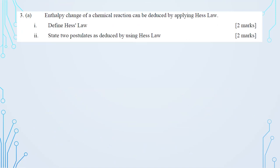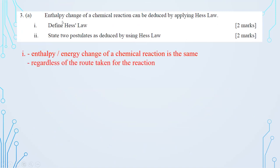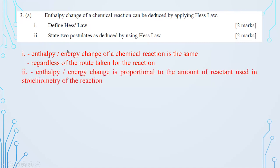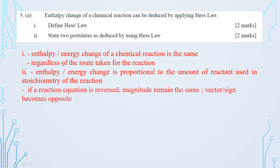Essay question three: define Hess's Law — the enthalpy change of a chemical reaction is the same regardless of the route taken, whether it proceeds in one step or a series of steps. State two postulates: (1) reversing an equation changes the sign of ΔH but the magnitude remains the same; (2) the enthalpy change is directly proportional to the stoichiometric coefficient (multiplying the equation scales ΔH accordingly).